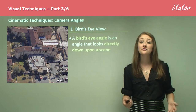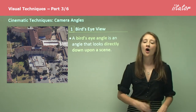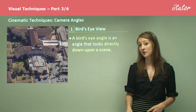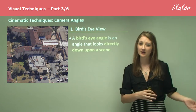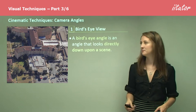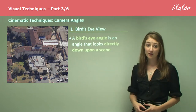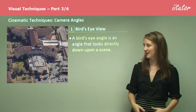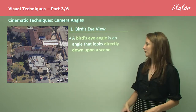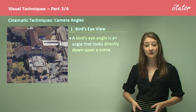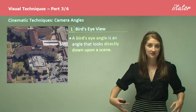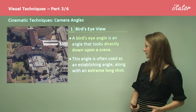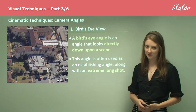Camera angles are another really important element of the camera's toolkit, working together with camera shot and camera movement. Firstly, we have the bird's eye view, which is exactly as it suggests — the view as if a bird were flying over the scene. It's an angle that looks directly down upon a scene, and is often used as an establishing angle along with an extreme long shot.